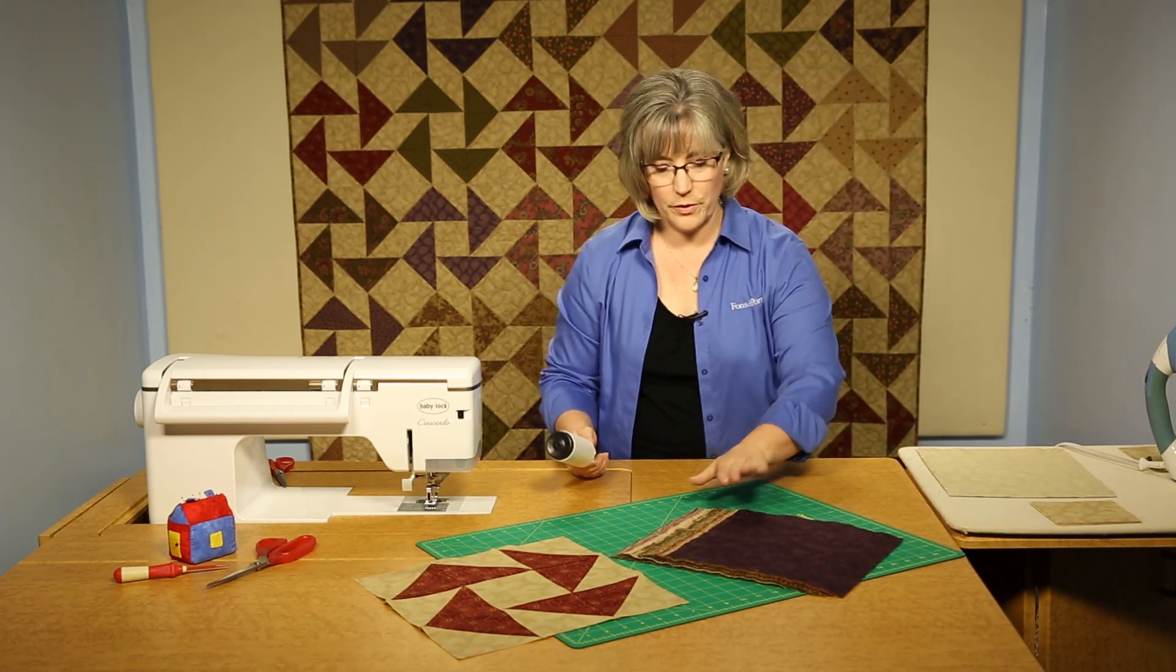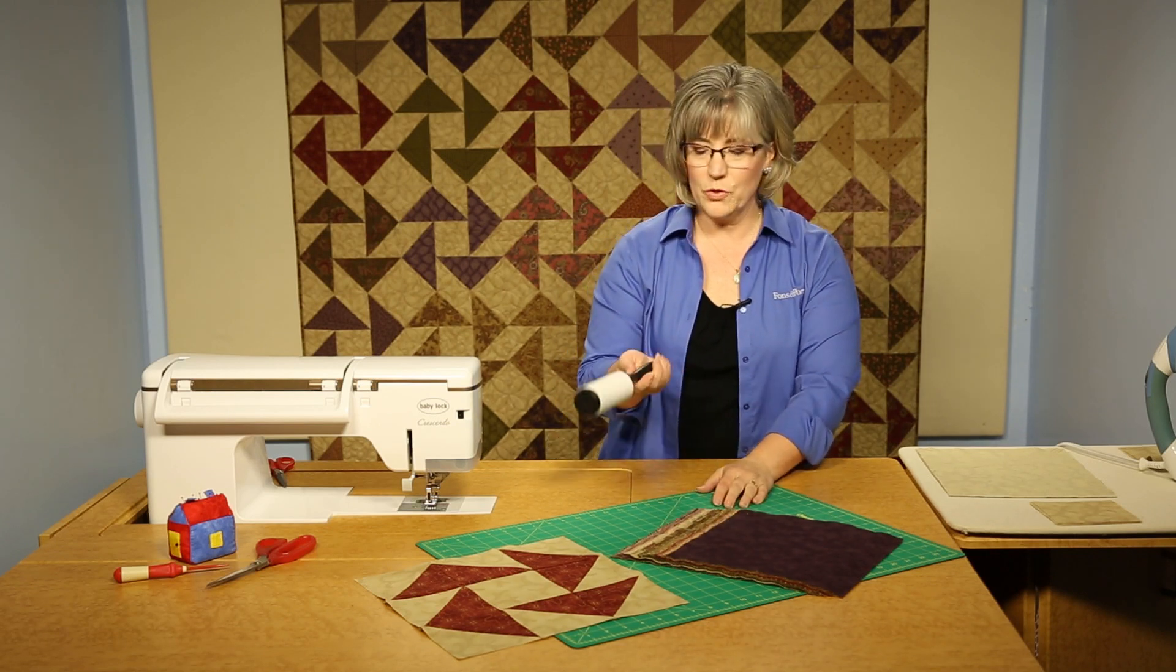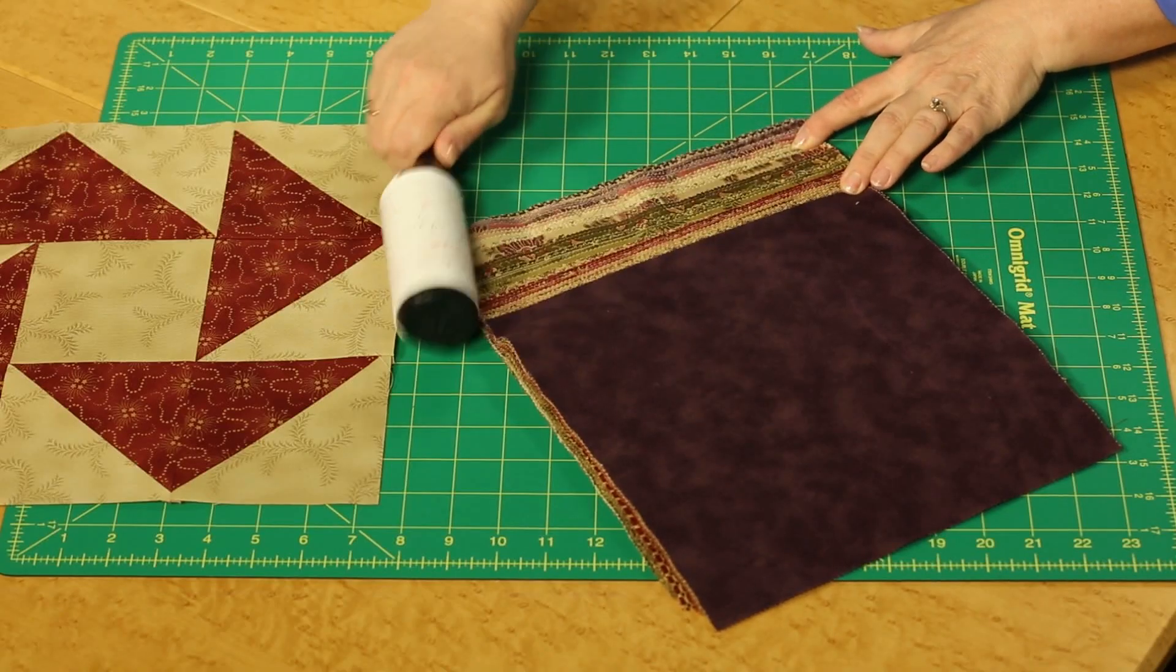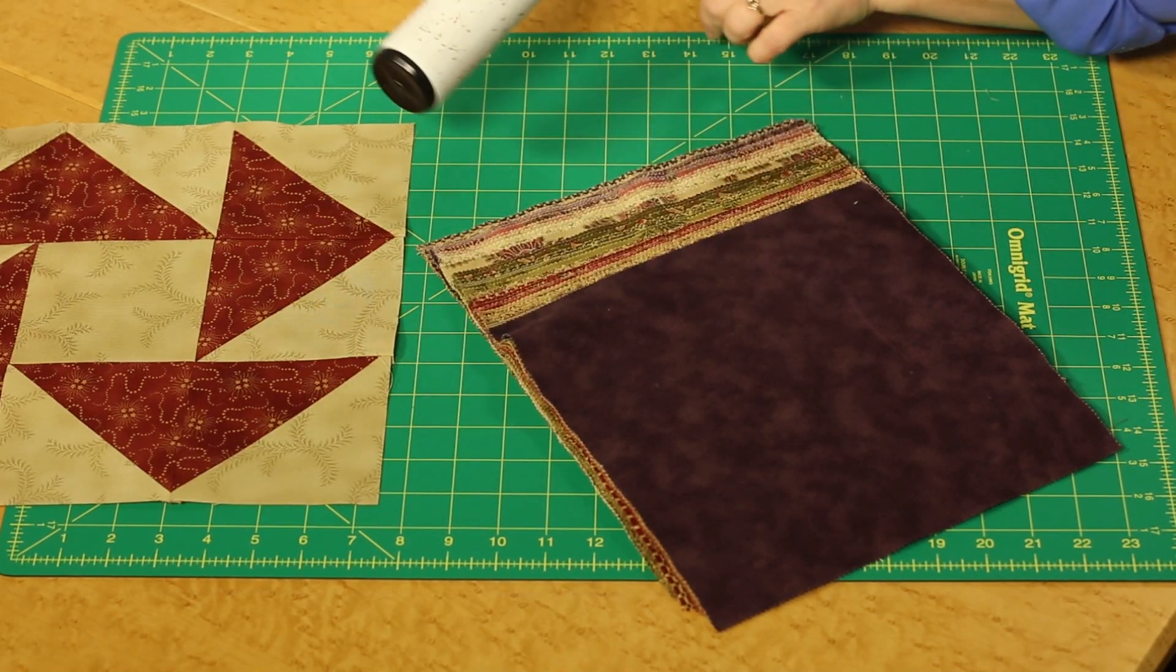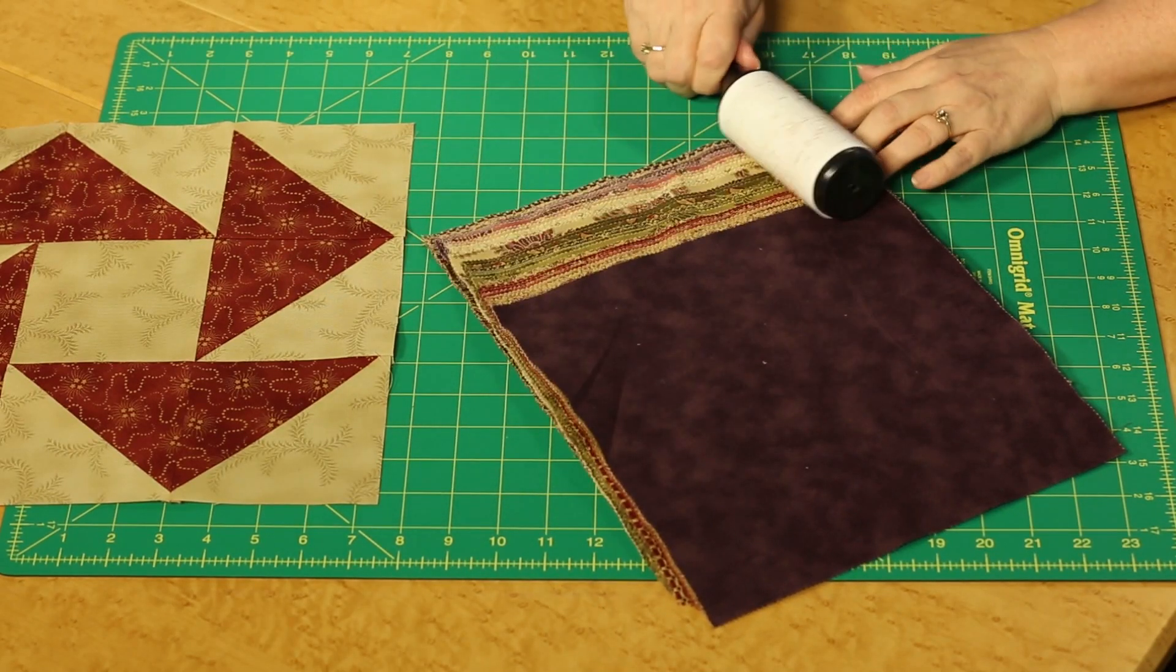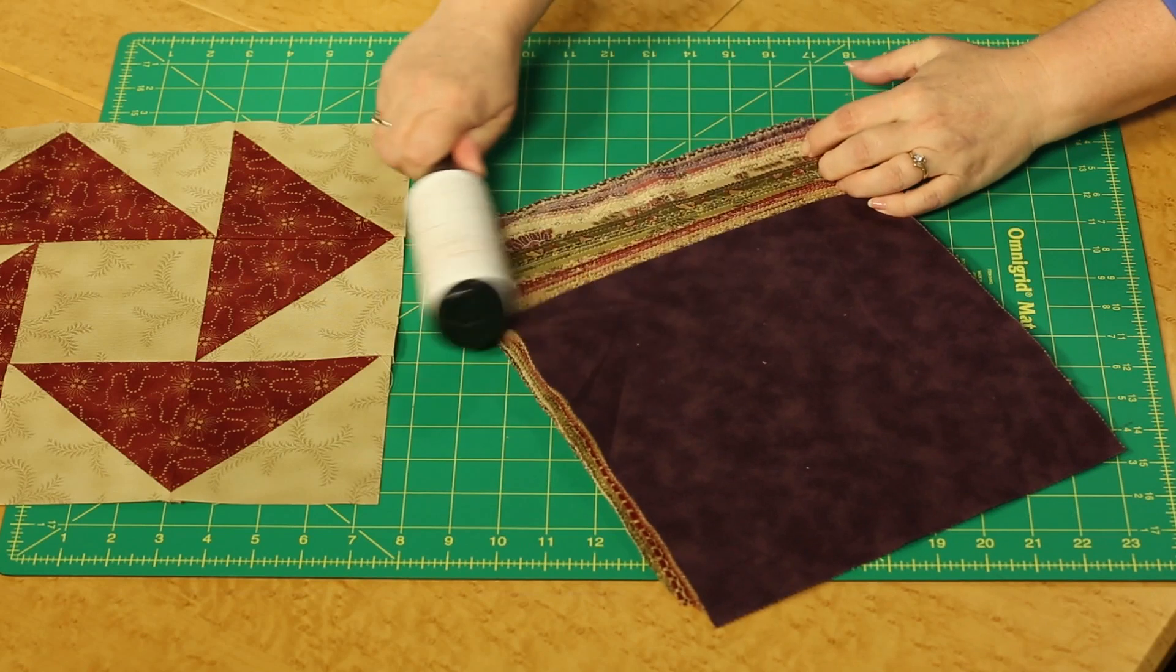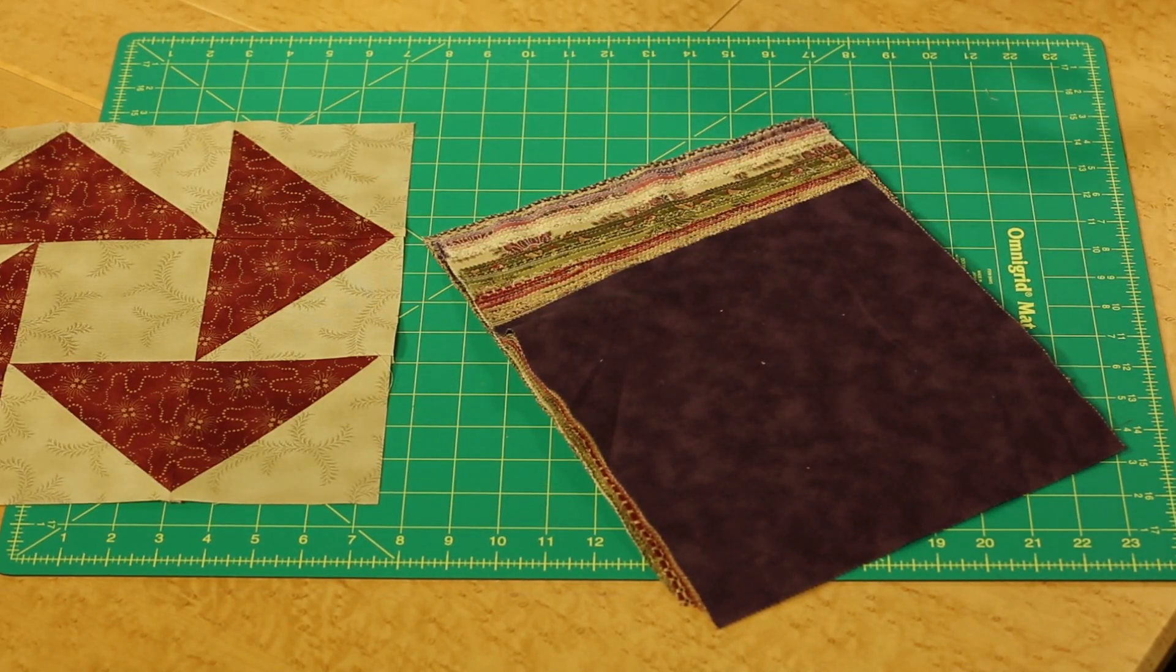Now if you were to work with pre-cuts that have that pinked edge, one little tip is to use a lint brush. As you open these you're going to create a lot of lint, and the nice part is the lint roller will pick it up and not damage those 10-inch squares. It'll make your sewing space a little tidier.